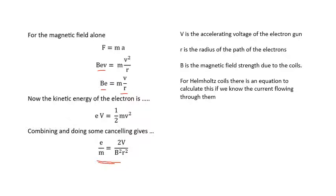Big V is the accelerating voltage of the electron gun, r is the radius of the circle that the electrons move in, B is the magnetic field strength due to the coils. For Helmholtz coils, if you know the current going through them, you can work out the field they produce.